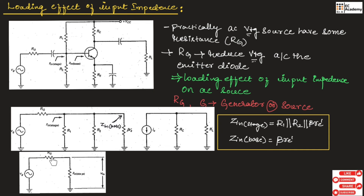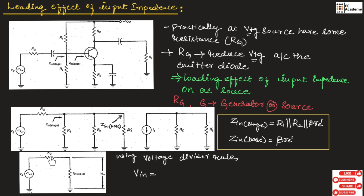If we consider the source voltage along with the internal resistance and input impedance across the stage, we can find the equation for input voltage using the voltage divider rule. By using the voltage divider rule, we can write: V_in equals Z_in_stage divided by (Z_in_stage plus RG), multiplied with VG.